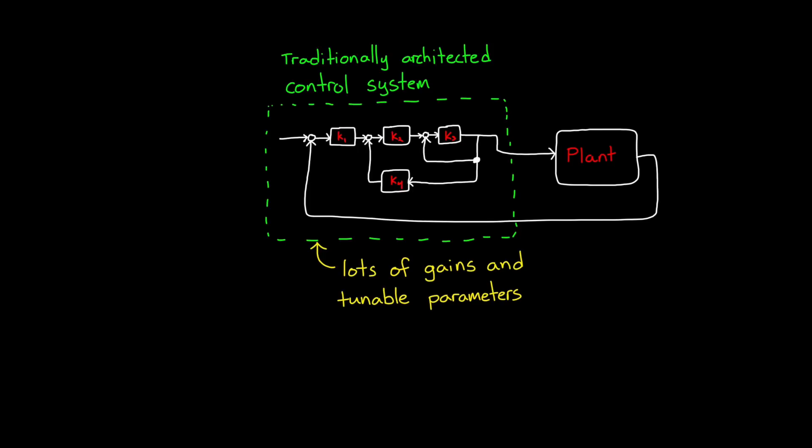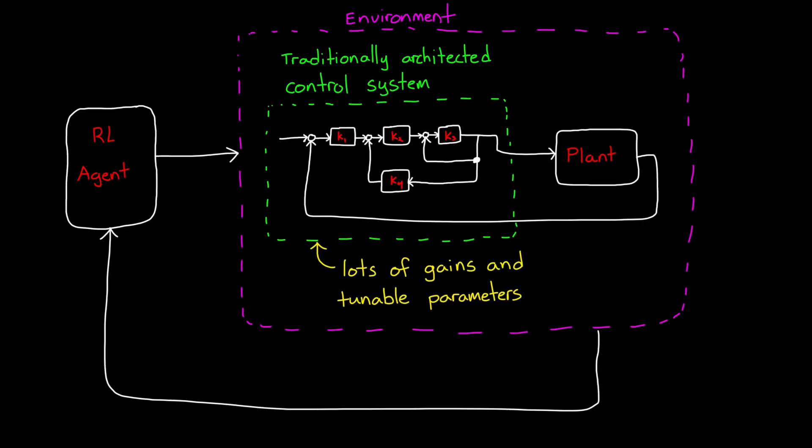The agent would be rewarded for how well the system performs and how much effort it takes to get that performance, and then the actions would be the hundred or so gains in the system. So when you initially kick off training, the randomly initialized neural network in the agent would just generate some random values, and then you'd run the simulation using those for the control gains. Now more than likely that first episode would produce some garbage result. But after each episode, the learning algorithm would tweak the neural network in a way that the gains move in the direction that increase reward.